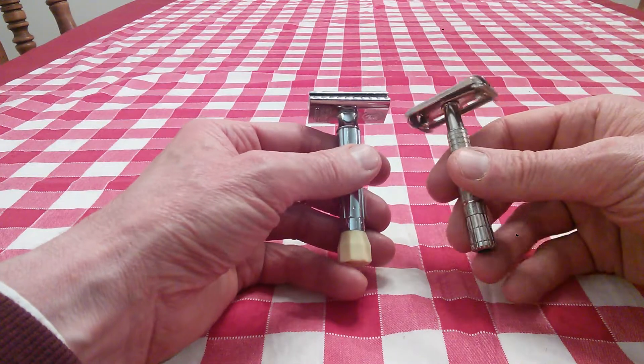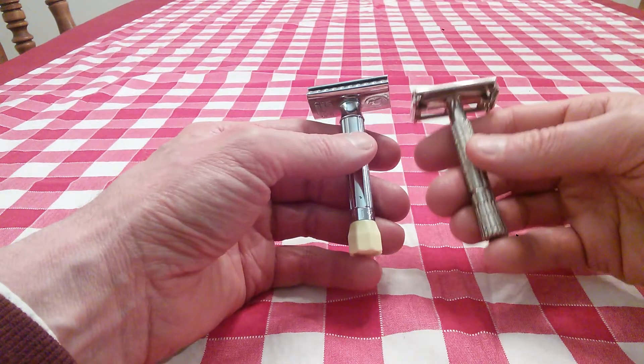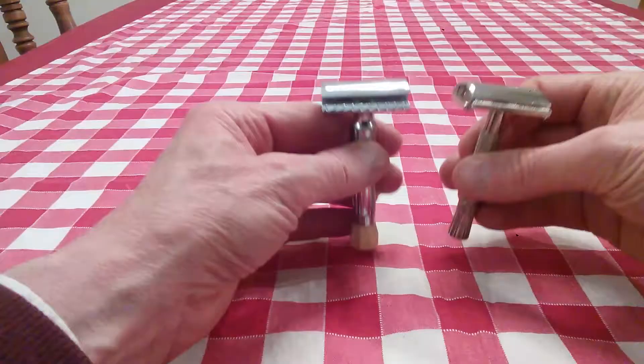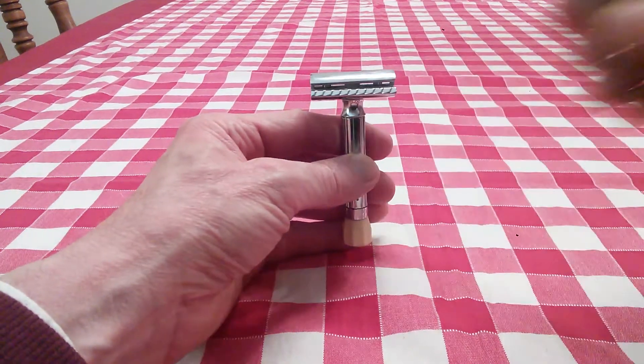Of course the Superspeed has a thinner handle to it and it is a bit lighter than the Merkur. But that's what it is size-wise against a very standard safety razor.